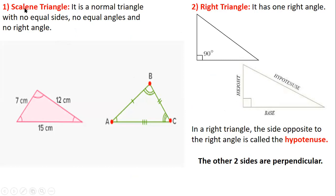Triangle number 1 is the Scalene triangle — this definition should be memorized. A scalene triangle is a normal triangle with no equal sides, no equal angles, and no right angle in it. If we look at this triangle, one side measures 7 cm, another 12 cm, and another 15 cm — no equal sides. The angles are all different, and there is no right angle, so this triangle is called a scalene triangle.